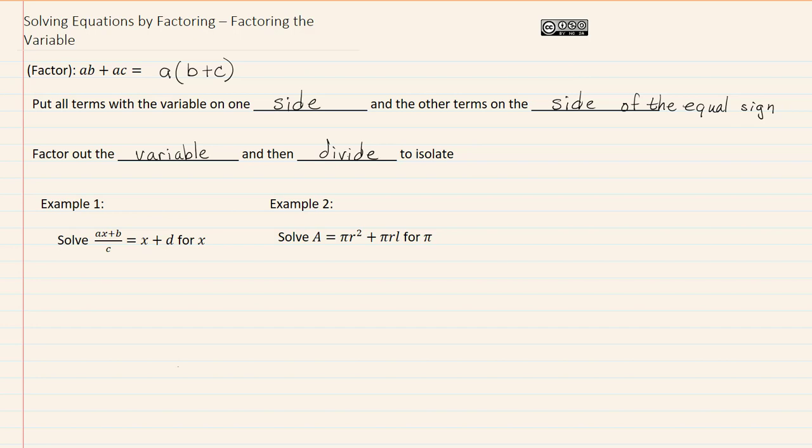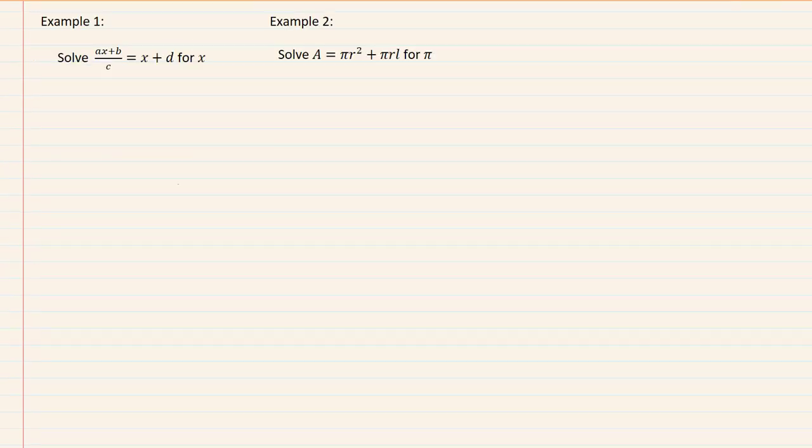So let's take a look at example one. In example one, we have ax plus b over c equal to x plus d. We do have a variable in the denominator, so the first thing that we need to do is multiply by the variables in the denominator, so that we can get it out of there, so we are not dealing with fractions.